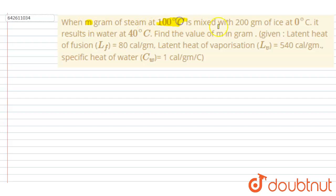When m grams of steam at 100°C is mixed with 200 grams of ice at 0°C, it results in water at 40°C. Find the value of m in grams. So if you see, m grams of steam was mixed with 200 grams of ice.